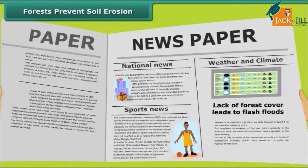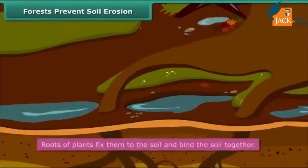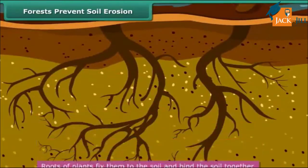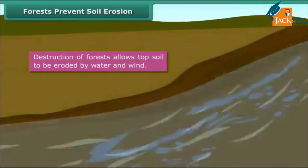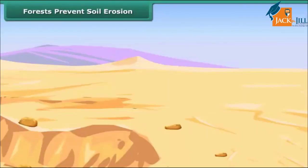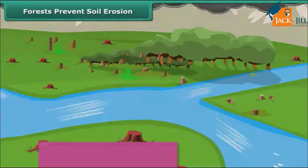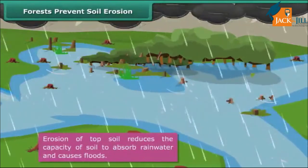Lina comes across a headline in the newspaper: 'Lack of forest cover leads to flash floods.' She is eager to know the connection between forests and floods. Roots of plants not only fix them to the soil but also bind the soil together. When forests are destroyed, the topsoil becomes loose and is eroded by water and wind. This causes an increase in desert land and reduces the fertility of the soil. Erosion of topsoil also reduces the capacity of soil to absorb rainwater, and as a result, there are floods.